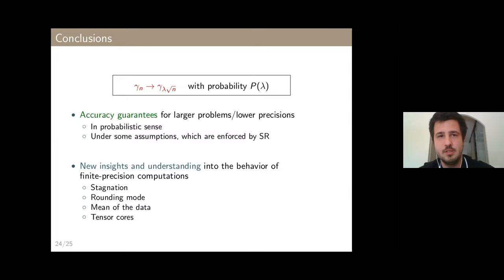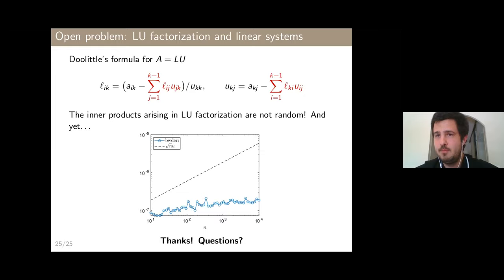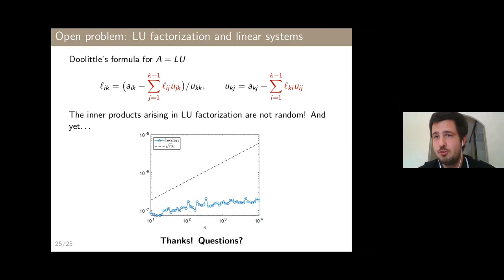But I want to conclude with something we do not yet understand. The LDU factorization of matrices — a very important kernel algorithm with many inner products — should in principle benefit from this work. The gamma * sqrt(N) bound holds and predicts error growth as sqrt(n). But if we perform the experiment, the error does not grow as sqrt(n) — it seems to stay almost constant. The inner products in LDU are not random and have no zero-mean reason to behave this way, and we do not know how to explain this. That concludes my talk; I'll be happy to answer questions.